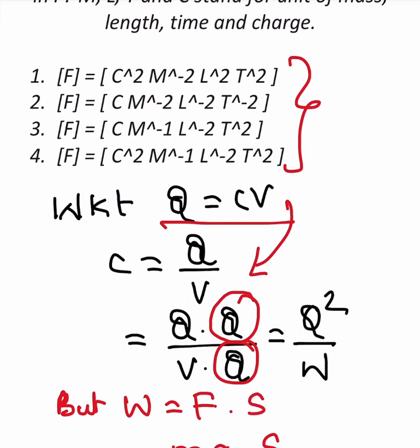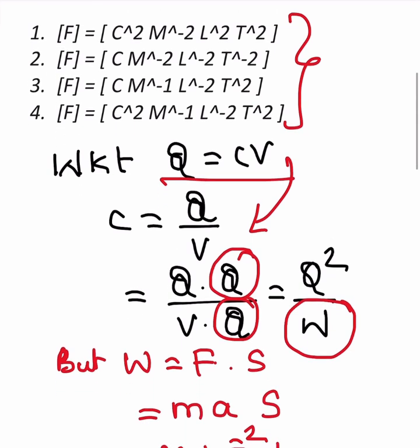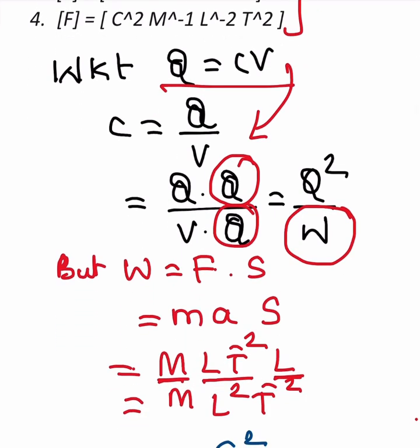But Q into V is equal to W, which is work done. We all know from our kinematics and 11th standard we know that work done is equal to force into distance. Force is equal to mass into acceleration, and this is distance. Mass dimensional formula is a single M. For acceleration, dimensional formula is L T minus two, that is rate of change of velocity, and S is the distance for that it is L.